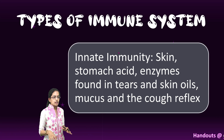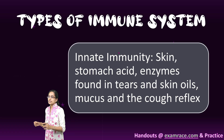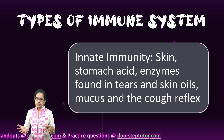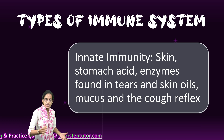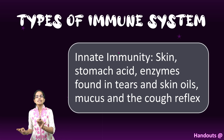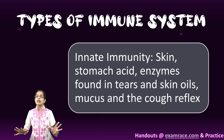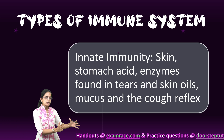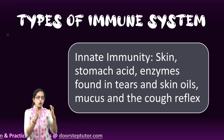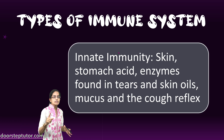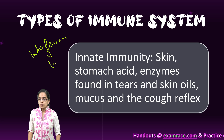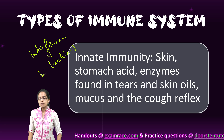Components of innate immunity include stomach acid, skin, enzymes in tears, skin oil, mucus, and the cough reflex — all of these are part of innate immunity. Innate immunity is non-specific, meaning it does not protect against any specific disease or threat. It is the general immunity a person has. Two key components of innate immunity are interferon and interleukin-1.